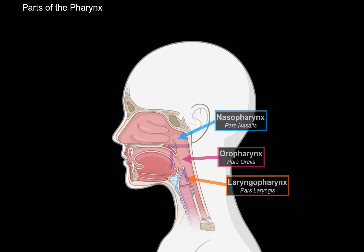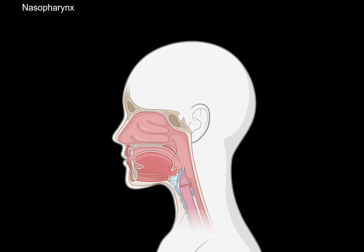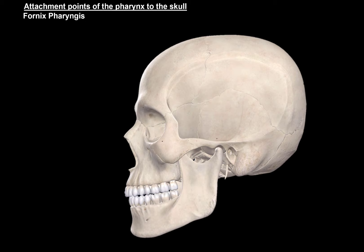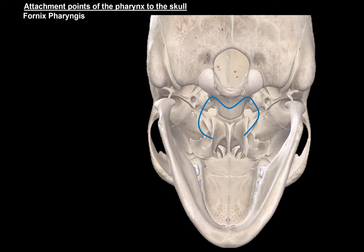Let's expand on that by going through all the structures associated with the nasopharynx. The nasopharynx corresponds to the level of the first to second cervical vertebrae, and is attached to the base of the skull. The attachment points between the pharynx and the base of the skull are called fornix pharyngis, or the vault of pharynx. The vault of pharynx is where the mucosa — which is the wet surface of the pharynx — is firmly attached to specific regions on the base of the skull. Looking at the model, we can see the actual attachment points of the fornix pharyngis.